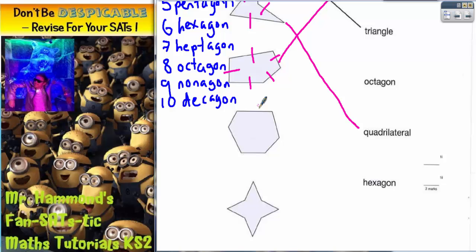Next shape has got one, two, three, four, five, six sides. Notice I'm marking off the sides of the line, just to double check. Six sides, any six-sided shape, if you check the list, is a hexagon. That shape joins to hexagon.